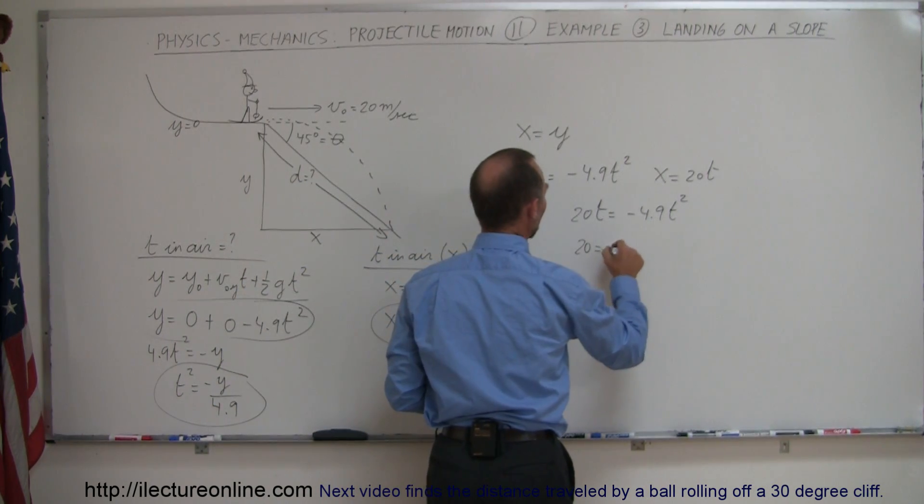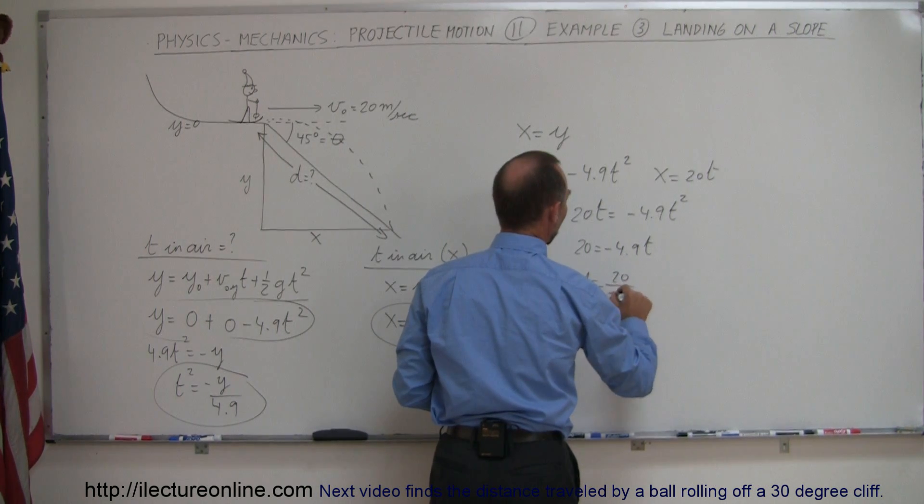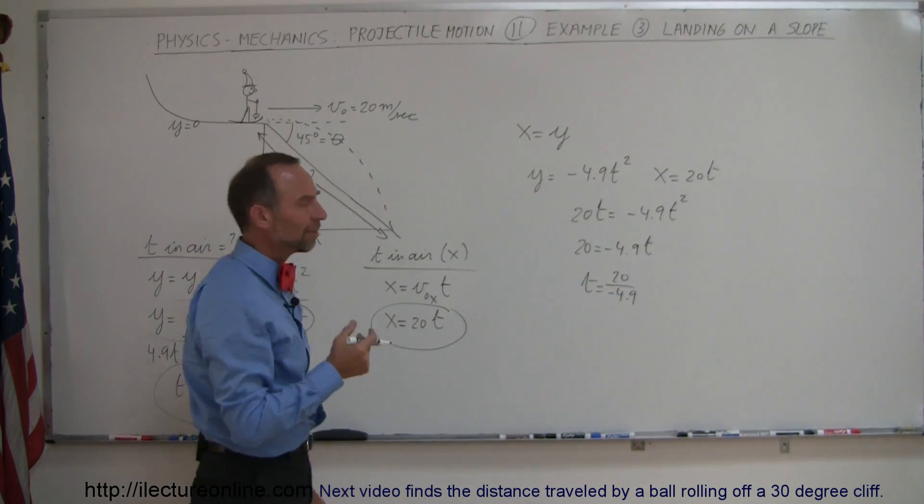I get 20 is equal to minus 4.9 t, or t is equal to 20 divided by minus 4.9. Wait a minute, now we have a negative time.